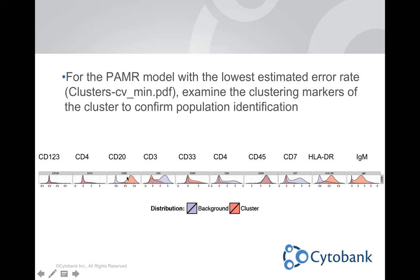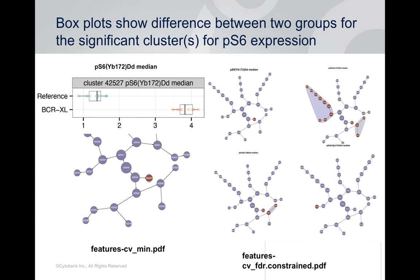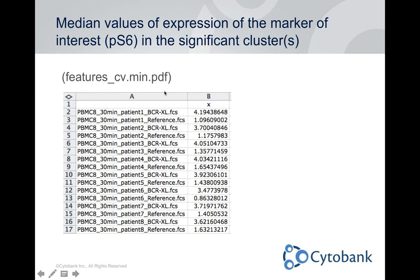Another PDF you'll get is a set of histograms describing the phenotype of the node or small set of nodes from whatever version you're looking at. For cvmin, we can see the most significant node had CD20 positive, HLA-DR positive, and IGM positive markers — very likely containing B cells. The FDR-constrained version gives all these different sets of histograms. Lastly, you'll get box plots — a single box plot for cvmin or many for FDR-constrained — showing transformed median values compared across groups. There's also a CSV file with these values for further statistical analysis.